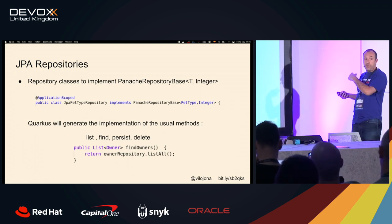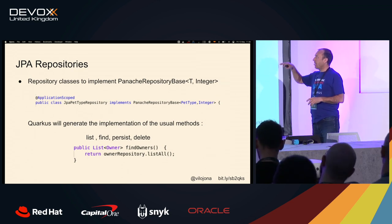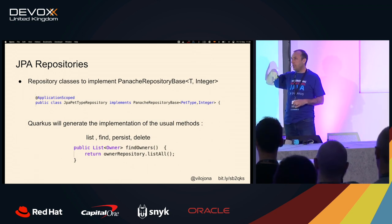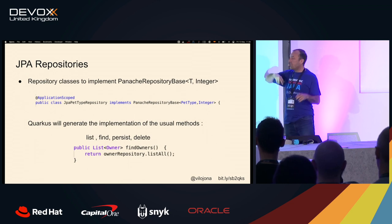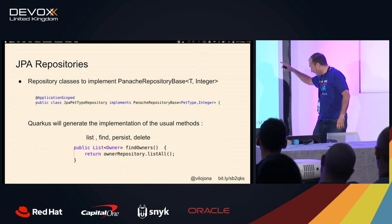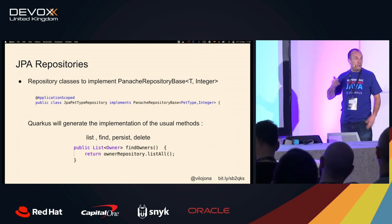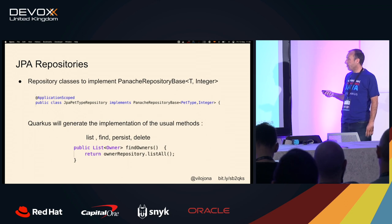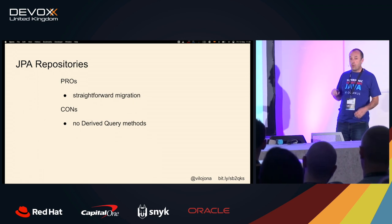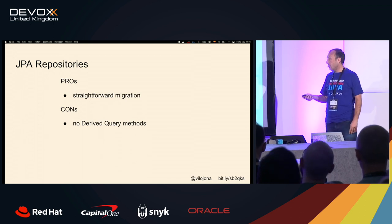Regarding JPA repositories — we move to Panache repository. I was using PanacheRepositoryBase because by default the identity type is Long, but in this case it was Integer, so I used the base class to define the identity type. We have the usual methods to handle those repositories. But we don't have derived query methods — those 'findByAgeAndName' style methods — that's the only drawback.